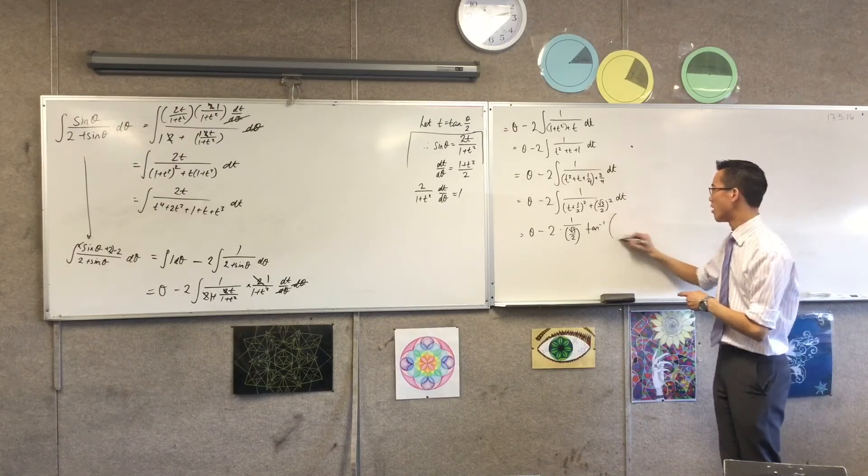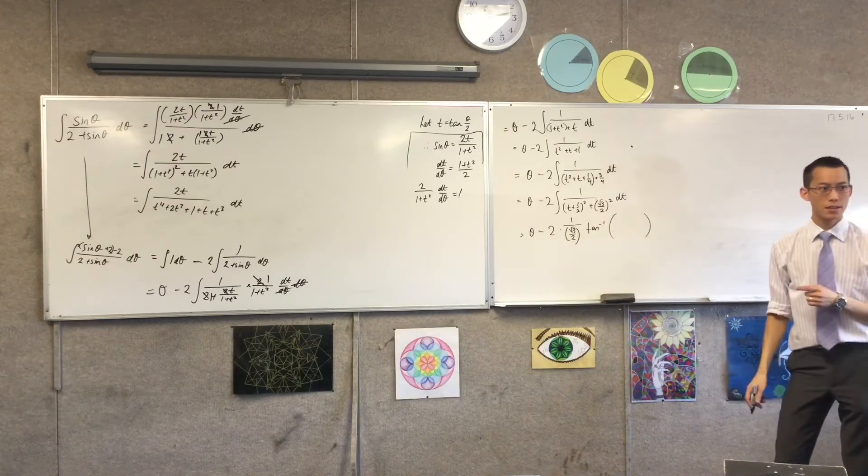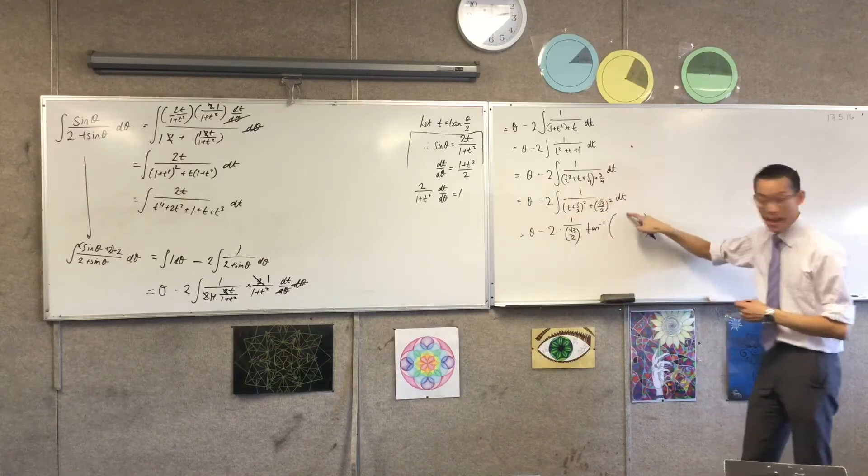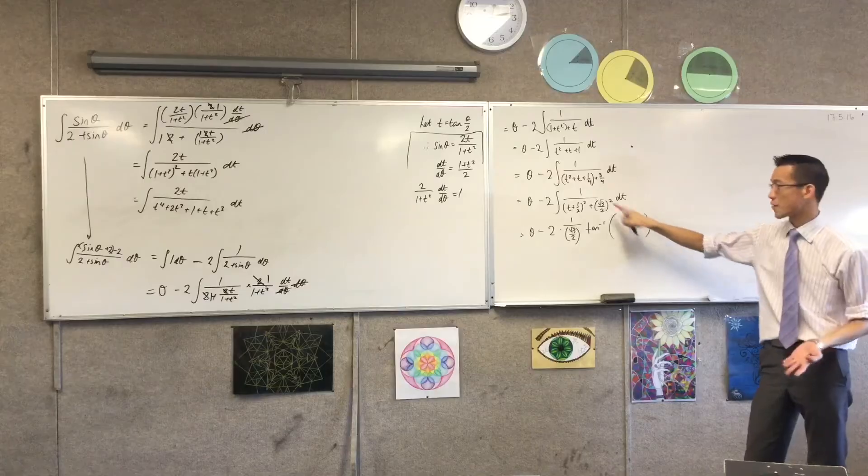Tan inverse of what's inside the brackets. So usually, this would be an x squared. So we'd have x on a here, but I don't have x. I've got t plus a half. t plus a half.